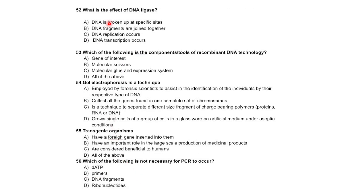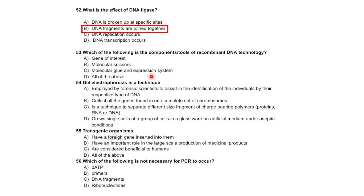PCR is a method for the rapid production of a very large number of copies of a particular fragment of DNA. The components and tools of recombinant DNA technology are: gene of interest, molecular scissors, molecular glue, and expression system — all of the above.